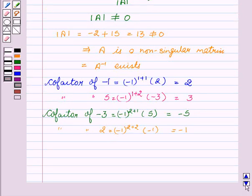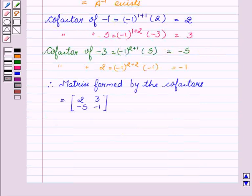Therefore the matrix formed by the cofactors is [2, 3; -5, -1]. Now we will find the adjoint of A.